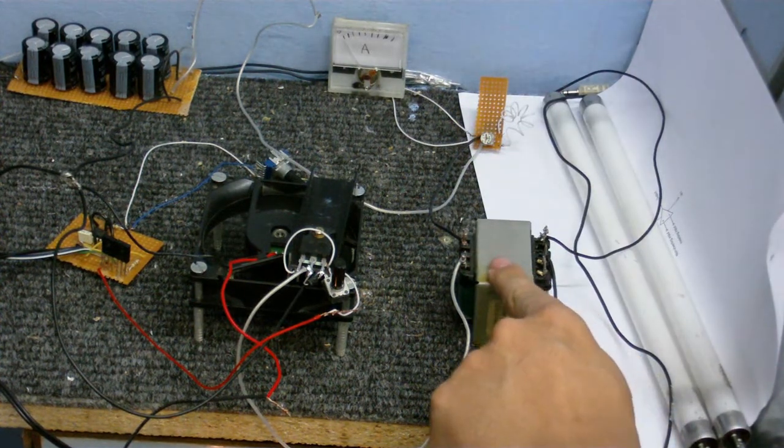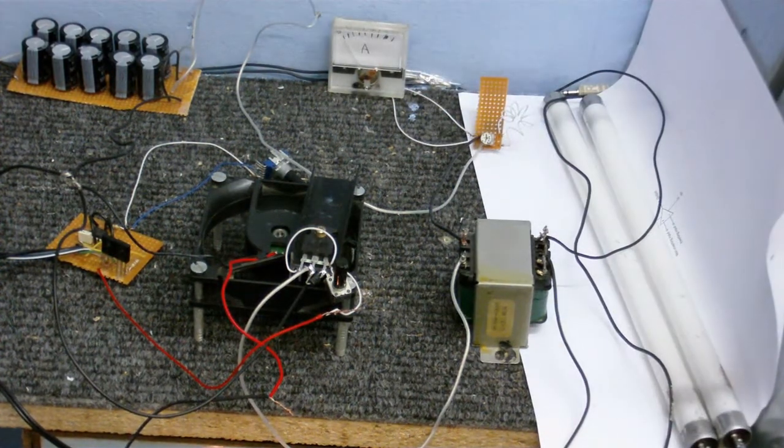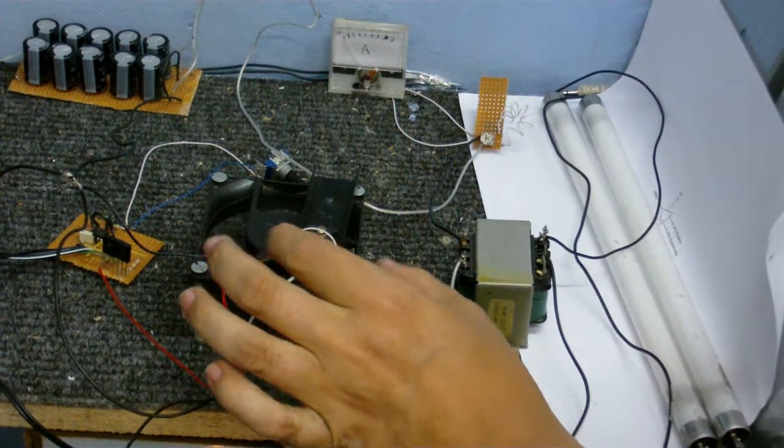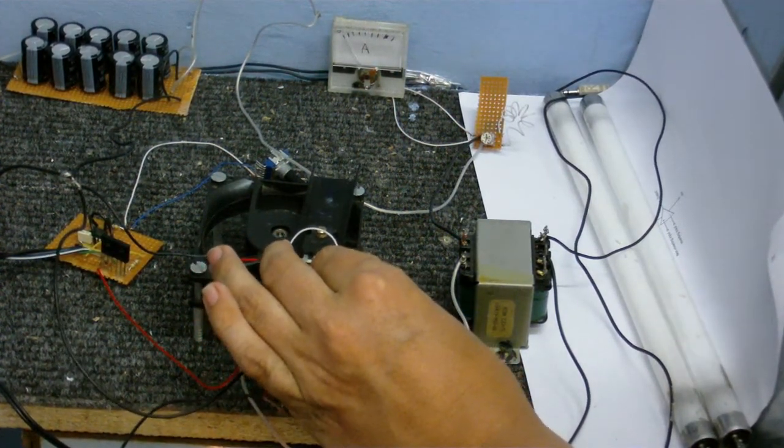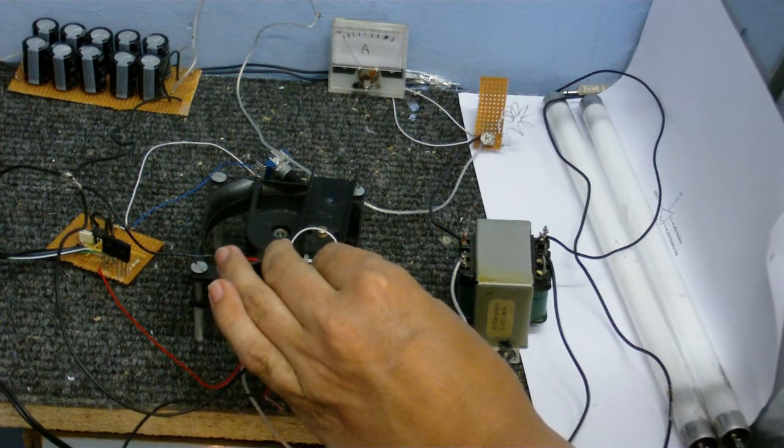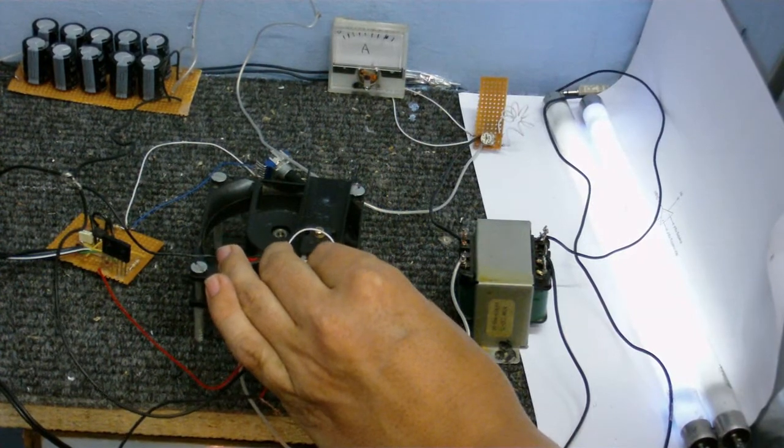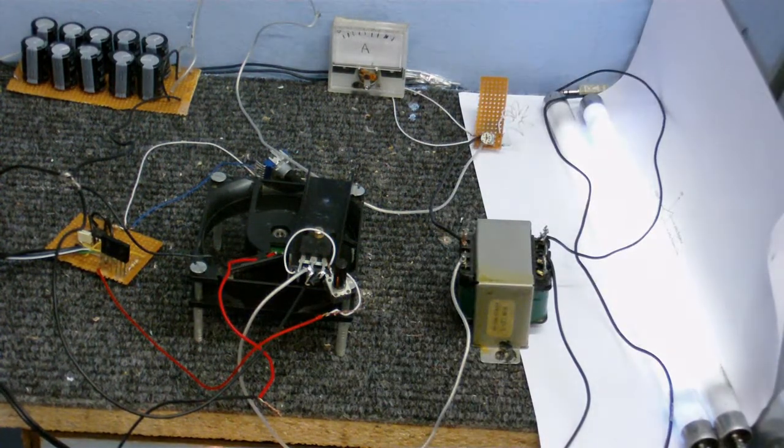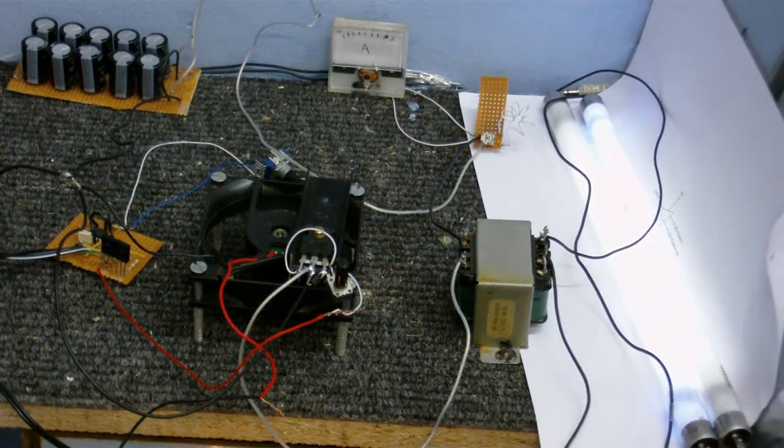I can already hear this transformer buzzing. And I've got a homemade amp meter connected to measure the current. Now, as I bring the power up, we should see the fluorescent lights come to life. There we go. Getting something. Now, as you can see, we're getting quite a lot of current on the amp meter that's measuring almost 4 amps. And the lights are barely doing anything.